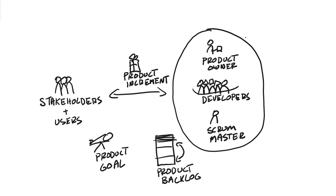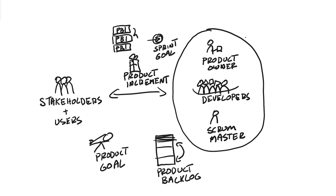In the Sprint Review, the team shares with the stakeholders the sprint goal and the product backlog items the team worked on to deliver on the sprint goal and produce the product increment.